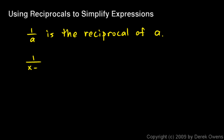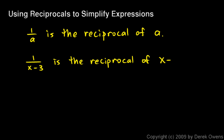For example, 1 over x minus 3 is, by definition, the reciprocal of x minus 3.